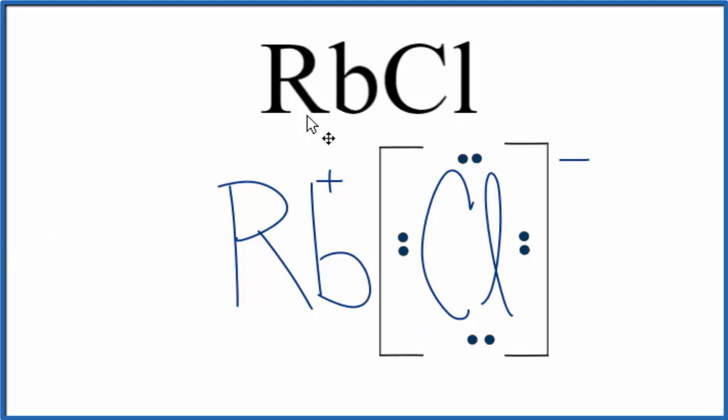So this is the Lewis structure for rubidium chloride, RbCl. Do note that this is just one formula unit. If we had a crystal of rubidium chloride, it would be a repeating pattern of this formula unit.